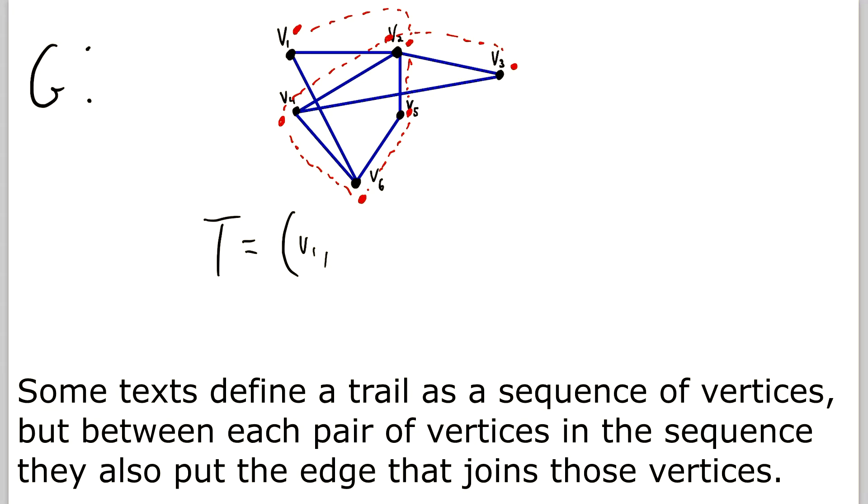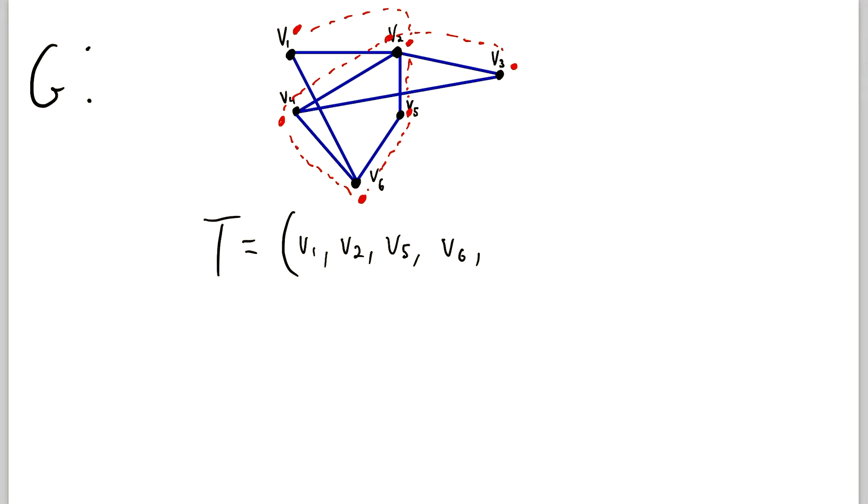So we started at V1, then we went to V2, then we went to V5, then to V6, then up to V4, then we revisited V2, and then we ended at V3. So what is it about this sequence of vertices that makes it a trail?